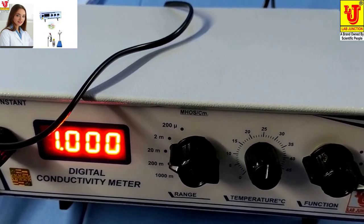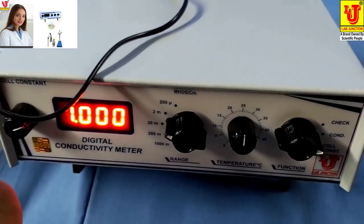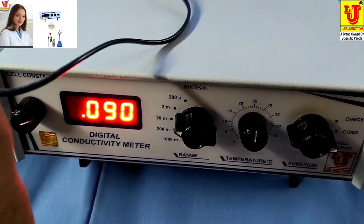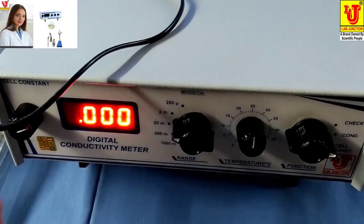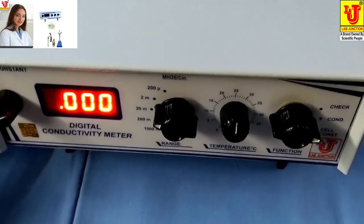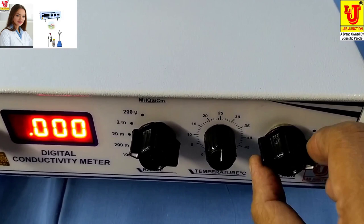Now your Digital Conductivity Meter is calibrated and it is ready for use. One parameter is left, that is cell constant.